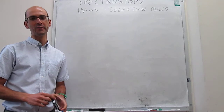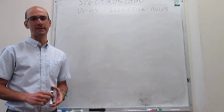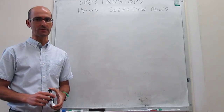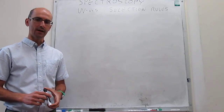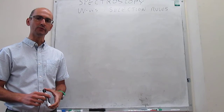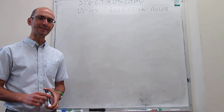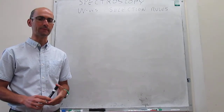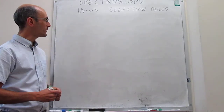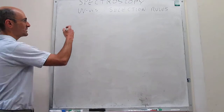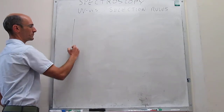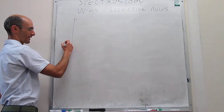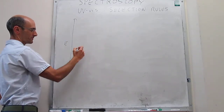In the prior video we introduced elementary concepts in UV-Vis spectroscopy. Now we move on to trying to understand the selection rules in that spectroscopy. In UV-Vis spectroscopy, what you are doing is promoting electronic transitions.